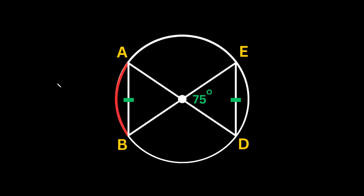As a quick reminder, a chord is just a straight line whose endpoints touch the edges of the circle. For instance, this line is a chord because its endpoints touch the circle there and there. Diameters are also chords — they're a special kind of chord because they run through the center of the circle.